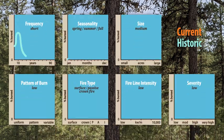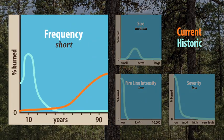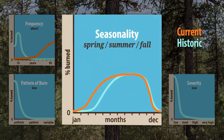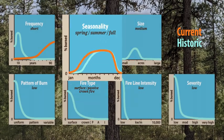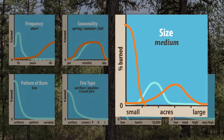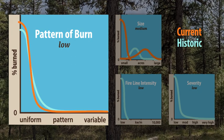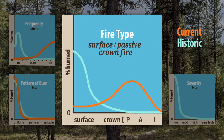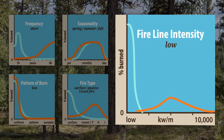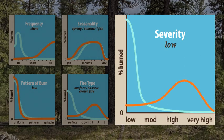Going back to our ponderosa pine example, let's see how the seven attributes have changed. Fire frequency decreased, meaning fires occur less often. The season has expanded as climate change has been lengthening the fire season. Fire size decreased mostly, but there's also been an increase in very large fires. The pattern has changed from lots of big low-severity patches to more big high-severity patches. The type has changed to more crown fires. Intensity has increased because there's been a buildup of fuels like dead branches and small trees. Severity has increased due to an increase in intensity and fire moving from the surface to the crown.